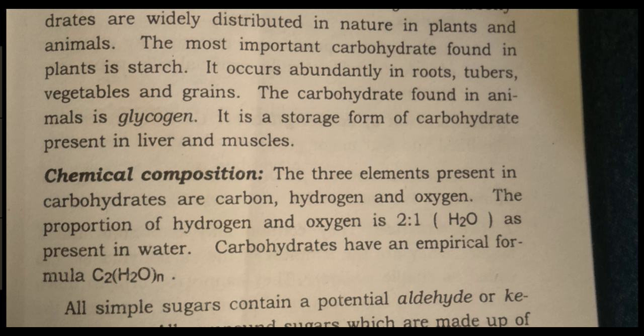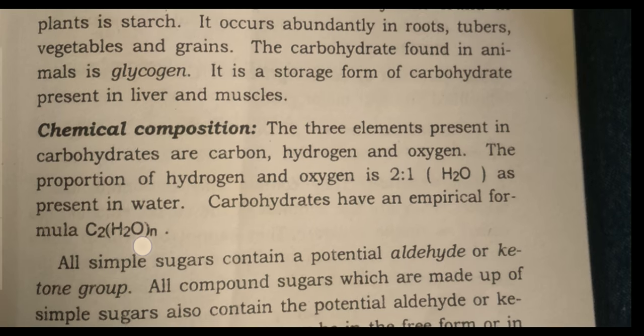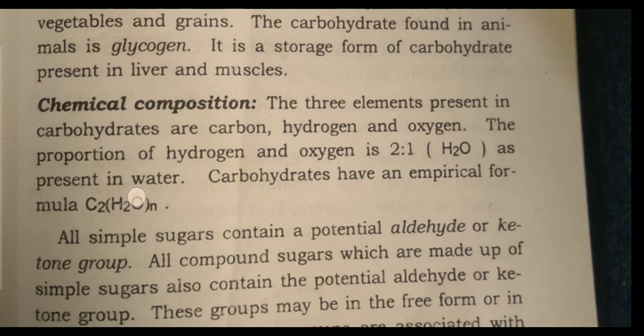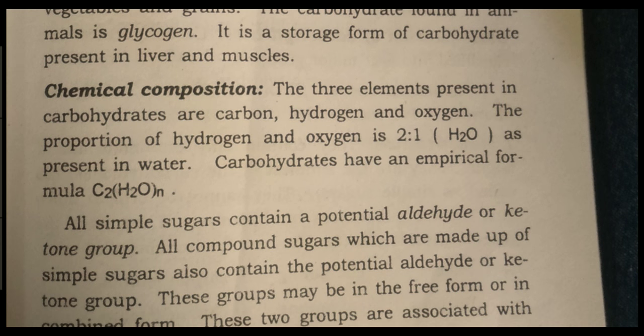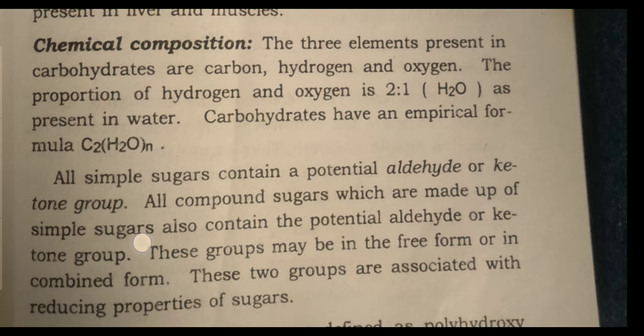Carbohydrates found in animals are in the form of glycogen. Glycogen is stored from carbohydrates and is present in the liver and muscles.